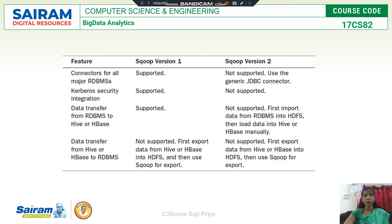Instead, in version 2 we have to first import data from RDBMS into the Hadoop Distributed File System. Then from HDFS, I can move data to Hive or HBase. And data transfer from Hive or HBase to RDBMS is not supported in both versions.